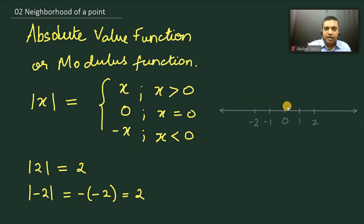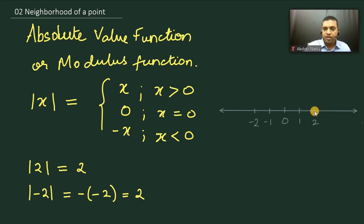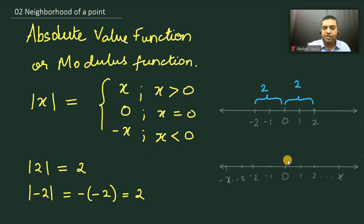On a real number line, the absolute value can be understood graphically as the distance of a specific point from the origin. So modulus of x represents the distance of x from the origin. For example, the distance of the point 2 from the origin is 2, and likewise the distance of the point minus 2 from the origin is also 2. So mod x is the distance of x or minus x from the origin.